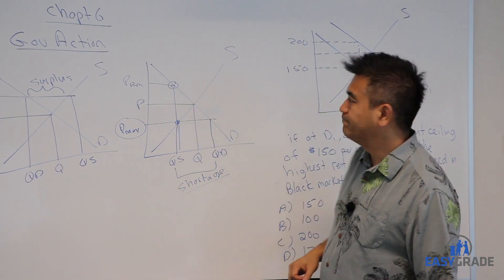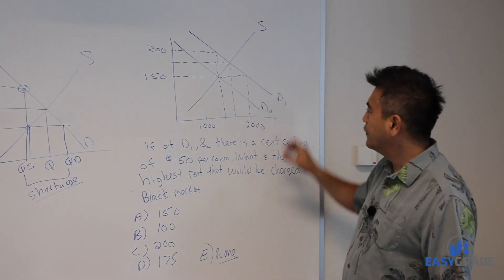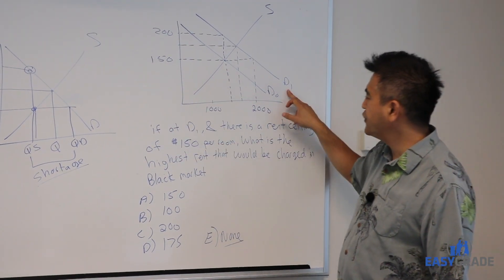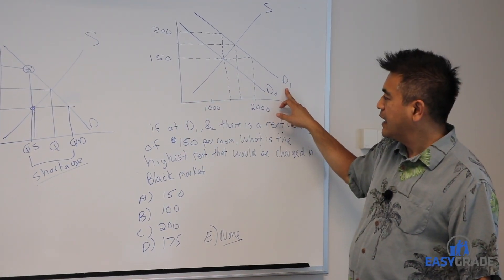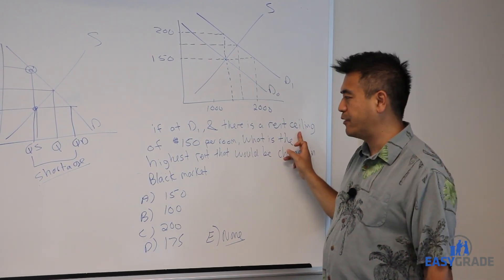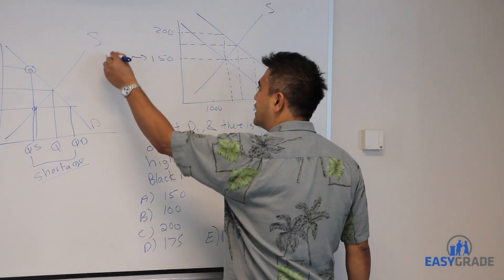Let's try a question. Past test question. Diagram looks like this. Question is, if we're at D1, so you got to look over here. If we're at D1 and there's a rent ceiling, that's a maximum price of 150 bucks. So here's your maximum price of 150.